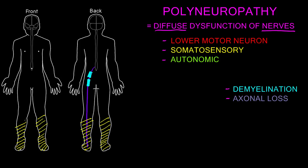The abnormalities may crawl their way up both legs, and then when it gets to about the knees, often the hands start to become involved as well. This is a diffuse process, so we usually see similar involvement on both sides — it may not be exactly symmetric, but it's usually pretty similar. With progression, we also start to see other abnormalities like lower motor neuron abnormalities in addition to the somatosensory abnormalities.